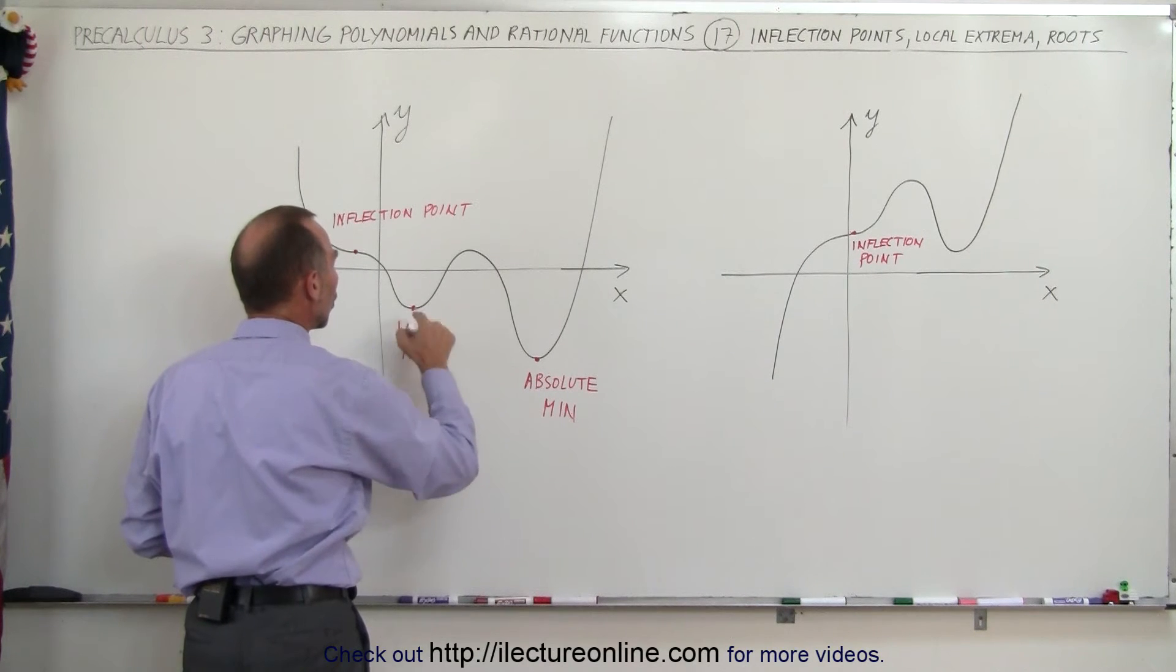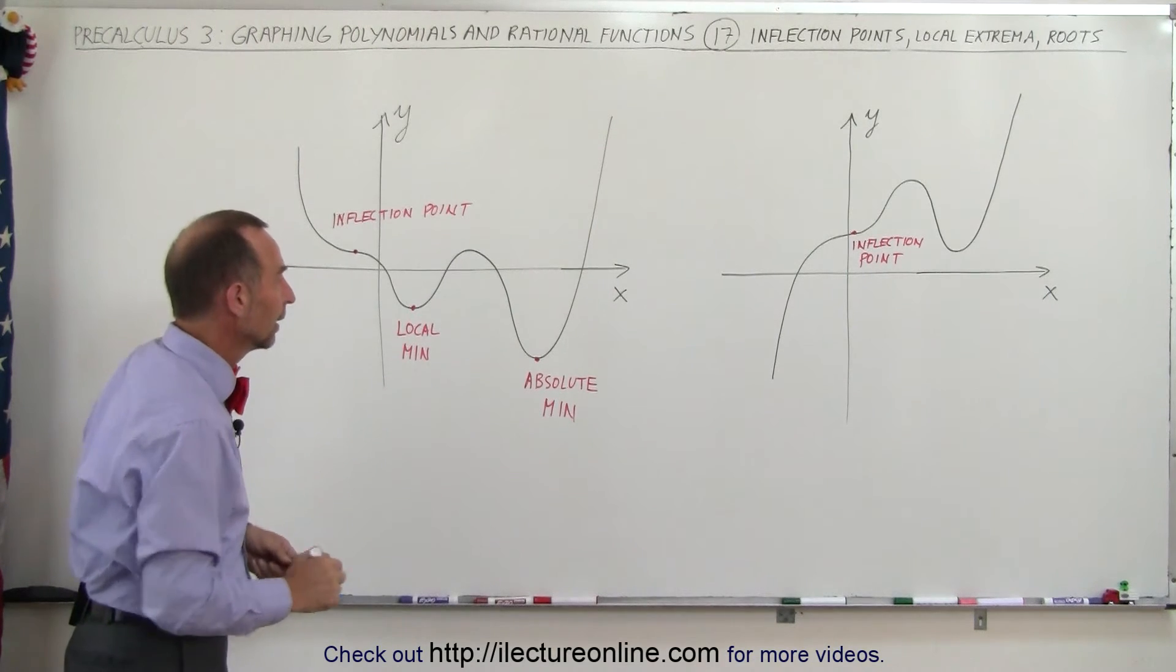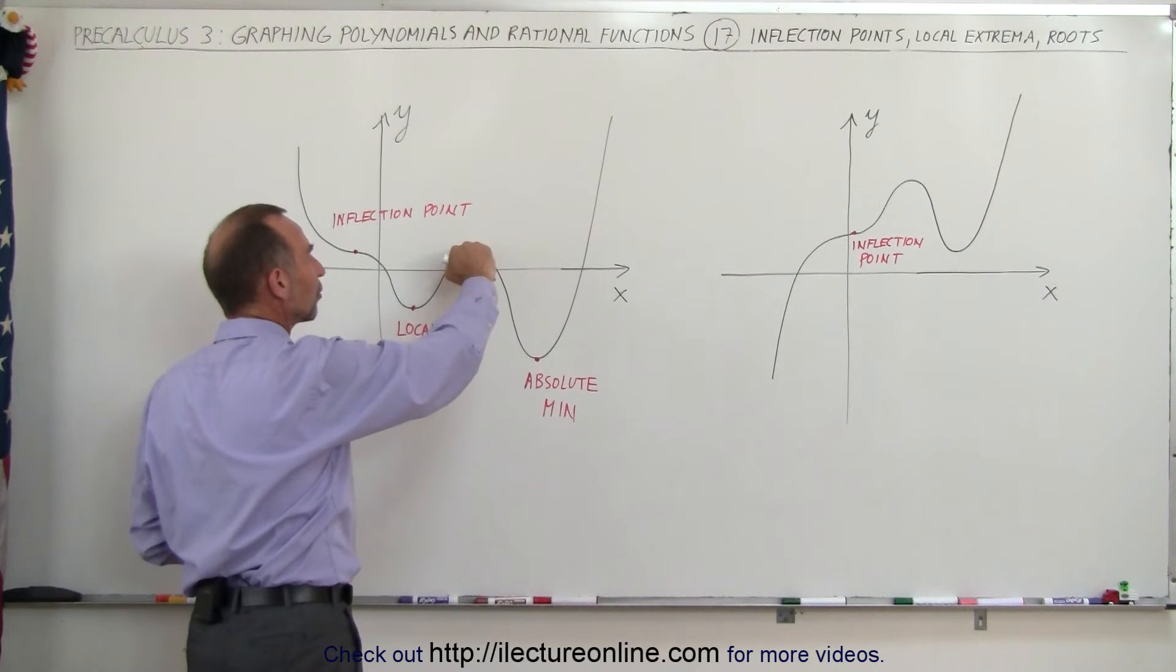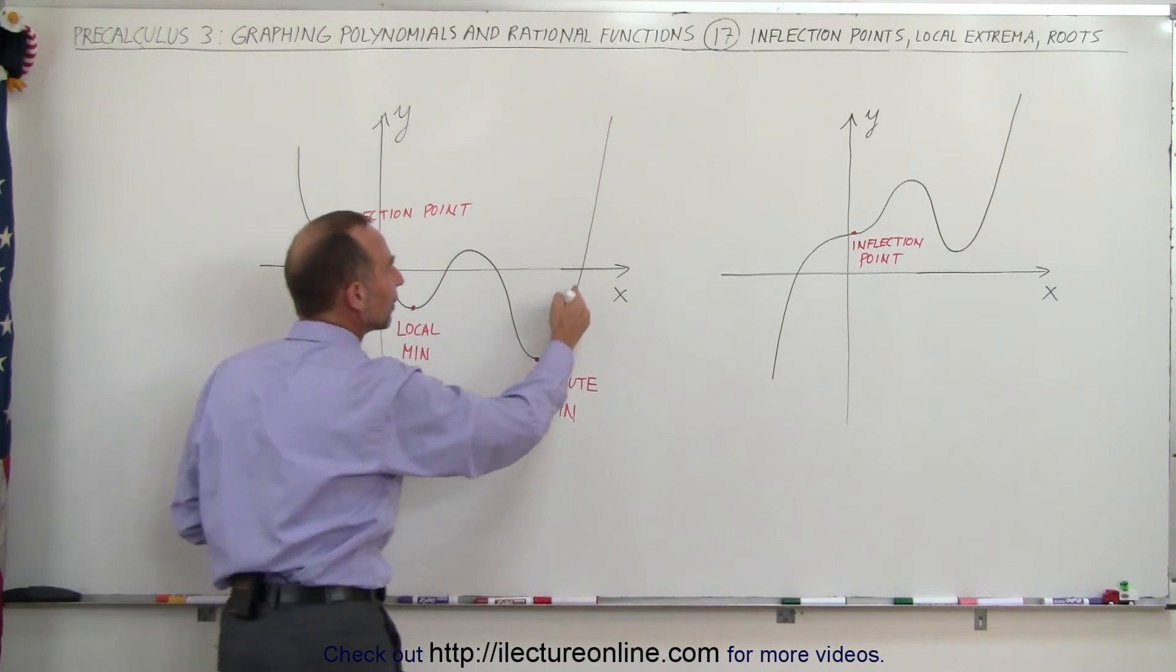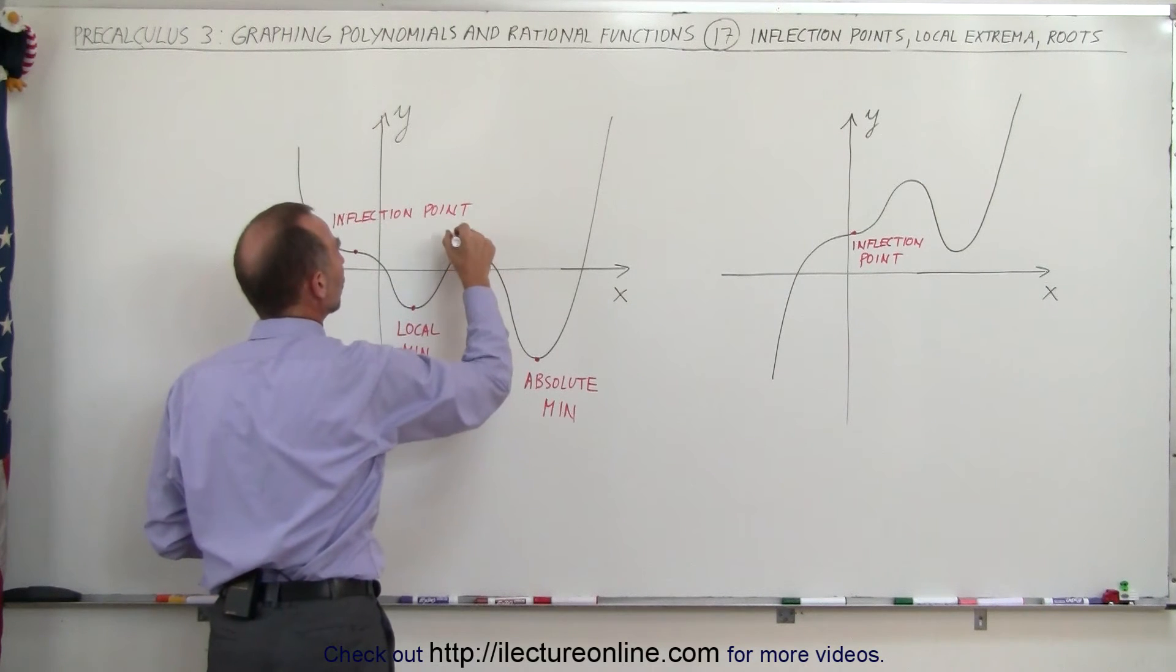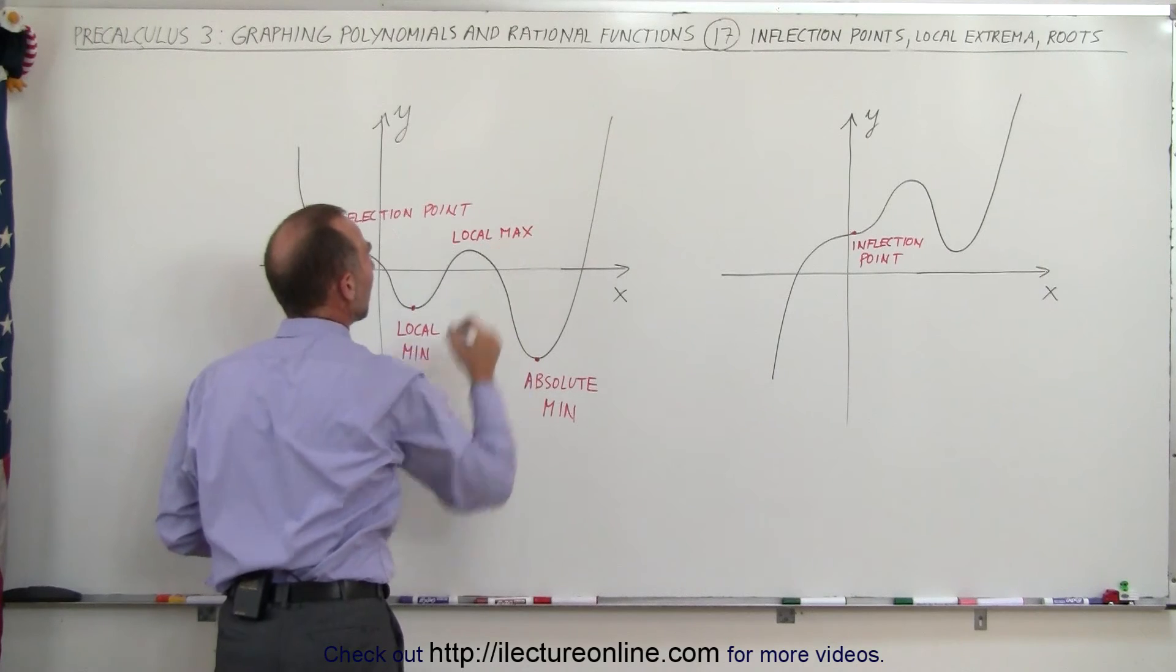Absolute min, and this is what we call a local min. So this is a local extrema. This is an absolute minimum. Now here we have what we call a local maximum. Notice that it does reach the highest point right here, it comes back down, but here it goes much higher than this point, and here we are much higher than this point. So this is called a local maximum or local max.